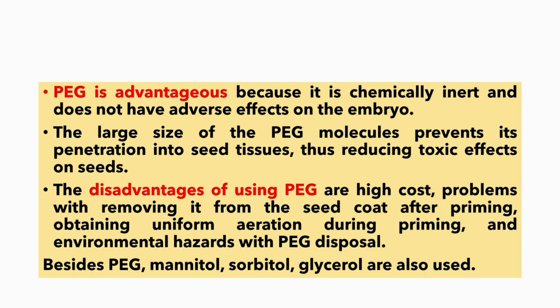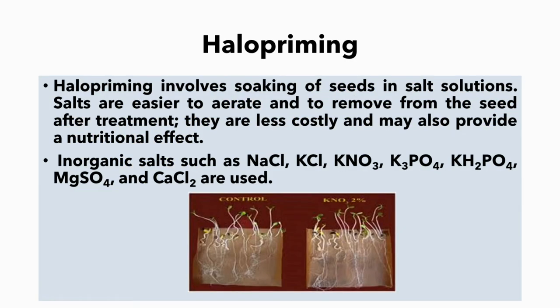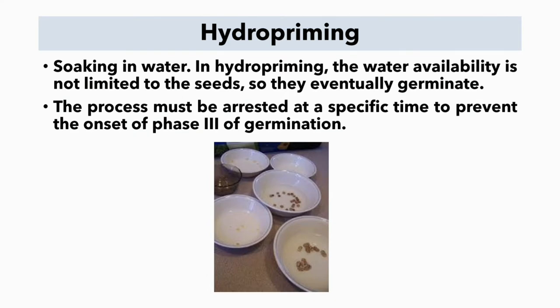Halo priming involves soaking of seeds in salt solutions. After treatment, salts are easier to aerate and to remove from the seed. They are less costly and may also provide a nutritional effect. Inorganic salts such as NaCl, KCl, KNO3, etc. are also used.